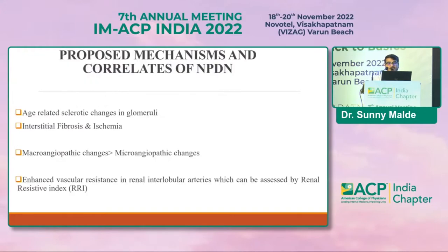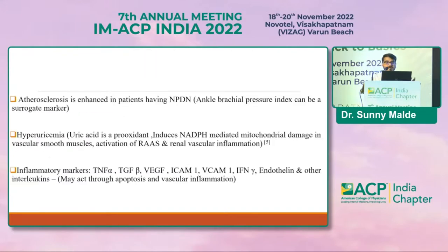The proposed mechanisms and correlates of non-proteinuric diabetic nephropathy are important. These include age-related sclerotic changes in the glomeruli, interstitial fibrosis and ischemia, macroangiopathic changes with enhanced vascular resistance in renal interlobular arteries assessable by the renal resistive index. Atherosclerosis is enhanced in patients with NPDN, and ankle brachial pressure index can be used as a surrogate marker for atherosclerotic changes. Hyperuricemia and inflammatory markers such as TNF-alpha, TGF-beta, VEGF, ICAM, and VCAM may act through apoptosis and vascular inflammation.